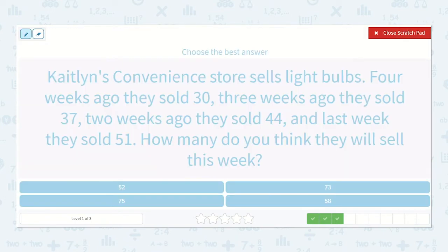Caitlin's convenience store sells light bulbs. Four weeks ago, they sold 30. Three weeks ago, they sold 37. Two weeks ago, they sold 44. And last week, they sold 51. How many do you think they'll sell this week? Well, let's see. 30, 37, 44, 51, and then our missing number.